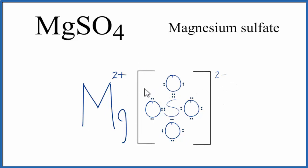You'll also note that if you add these numbers up, it's zero, because the total charge on magnesium sulfate is zero. It's a neutral compound.